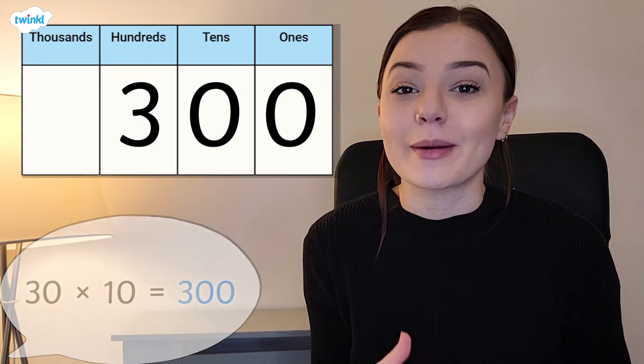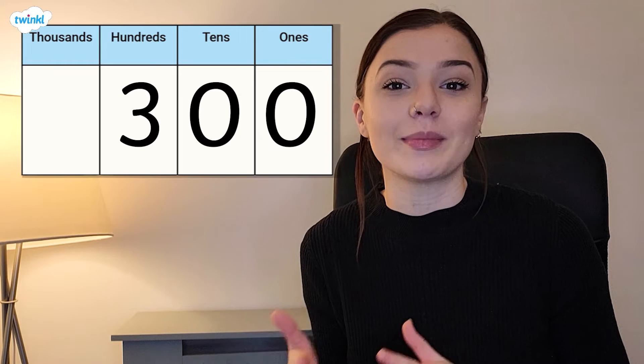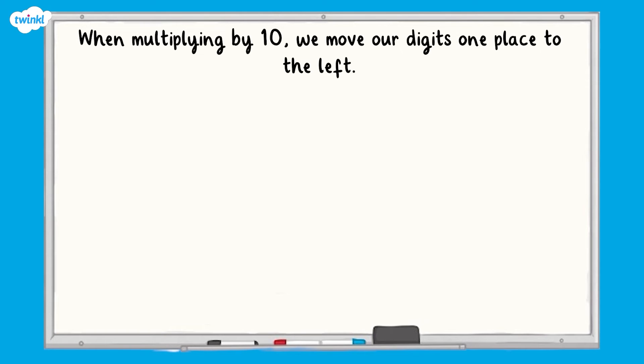When writing this down, we must remember to put a placeholder in the ones column to keep the three in the hundreds column and the zero in the tens column. So we know that when multiplying a number by 10, we move our digits one place to the left on a place value chart.